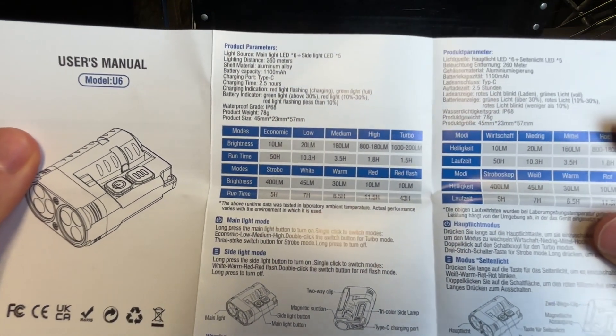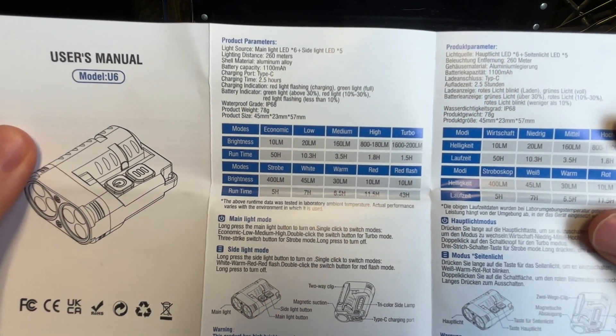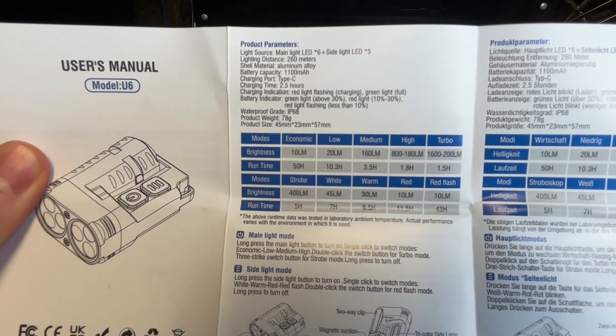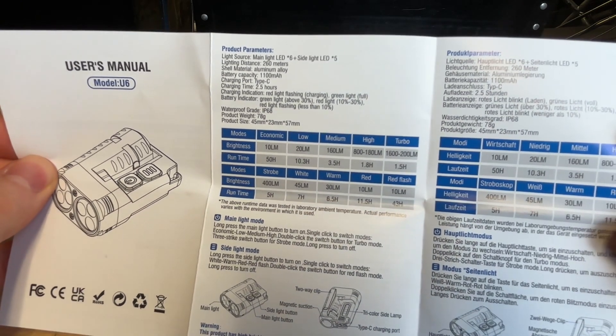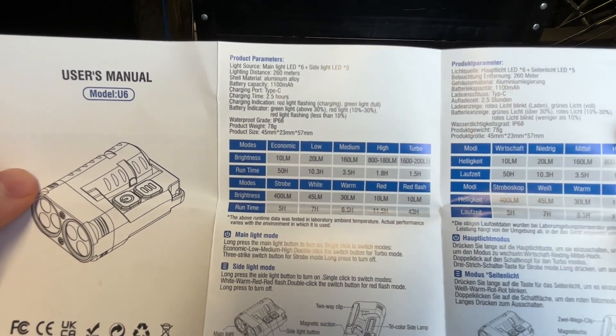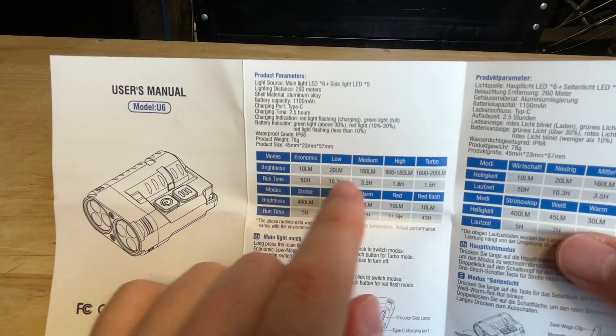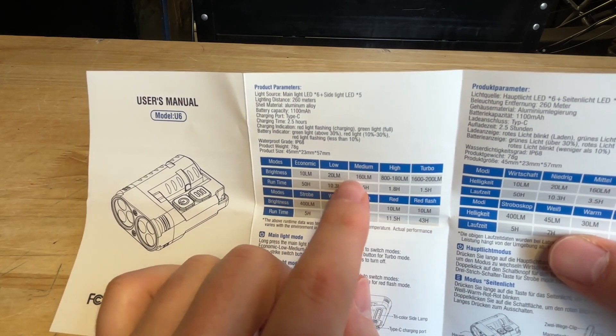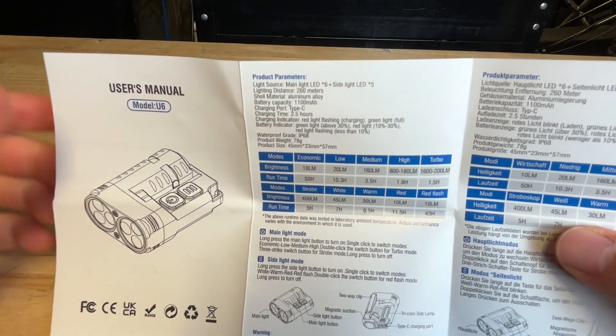So we've got a couple of modes here: white, warm, red, a red flash, economic mode. I guess it's like a nighttime mode there, you could say. We've got low, medium, high, turbo mode here. And of course, we've got the lumen ratings on these. It's pretty wild how these lumen ratings really bump up in size here. You go from like 10 lumens, 20 lumens, 160, bam, it's 10x to turbo mode, which is pretty wild there.